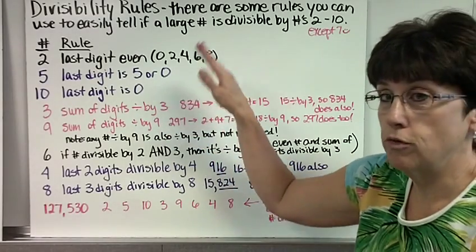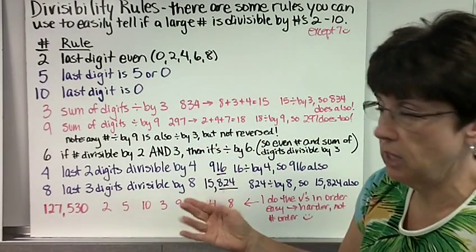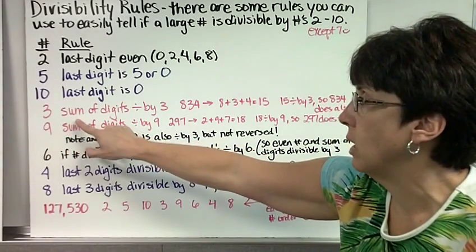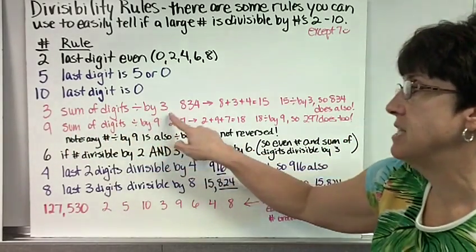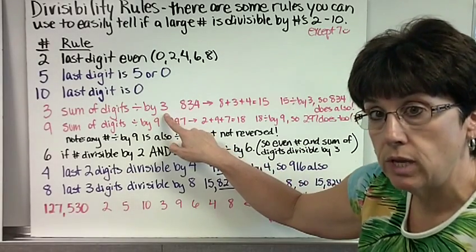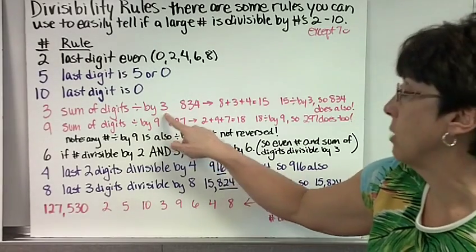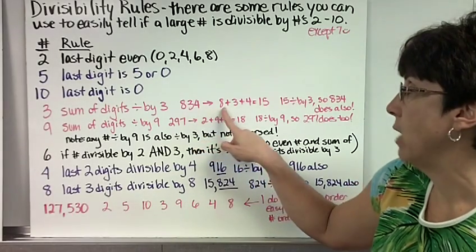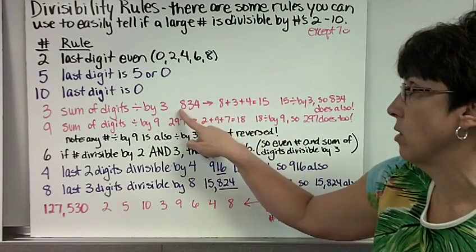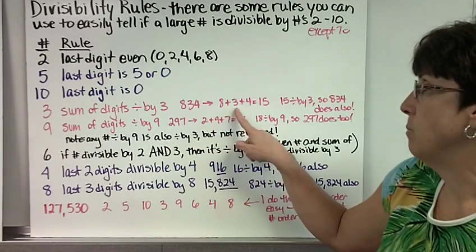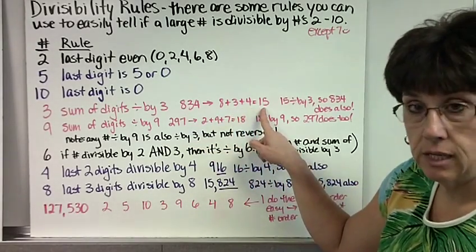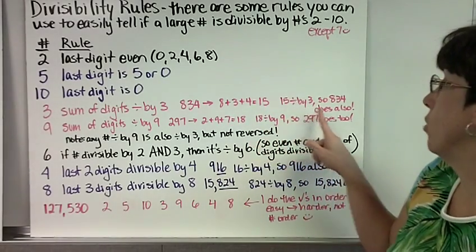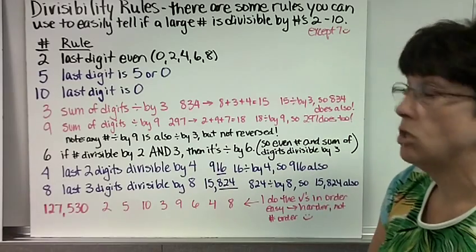So I put them in order from easiest to a little less easy. Is the number divisible by 3? Well, if the sum of the digits is divisible by 3, then the whole number is divisible by 3. So let's say I have the number 834. I do 8 plus 3 plus 4. I add these up. 8 plus 3 plus 4 is 15. 15 is divisible by 3, so 834 is also.